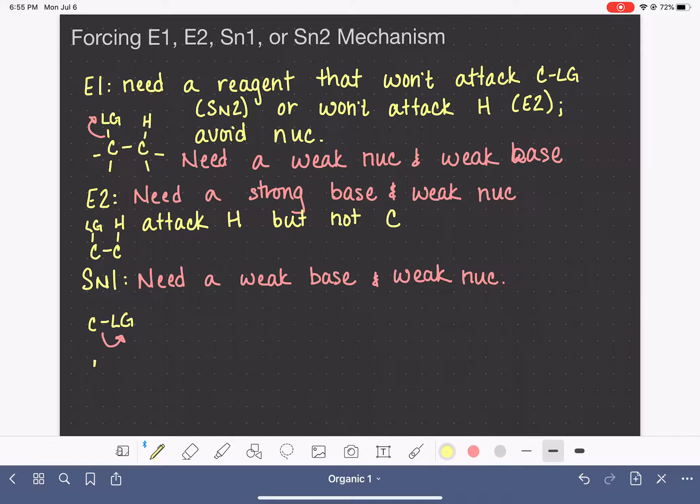And last but not least, for SN2, in the SN2 reaction, we have carbon with the leaving group. And our substance is attacking the carbon to get rid of the leaving group. So for the SN2 reaction, we need a strong nucleophile, something that will go after that carbon and initiate the loss of the leaving group. We don't want this thing to be a strong base because we want it to selectively attack the carbon, not the hydrogen. So we need something that's a strong nucleophile, but a weak base.